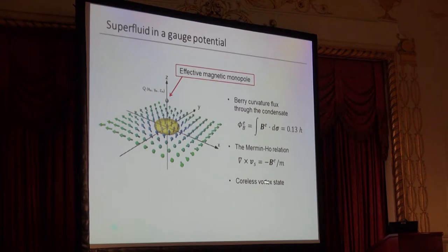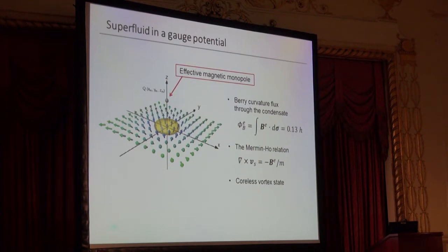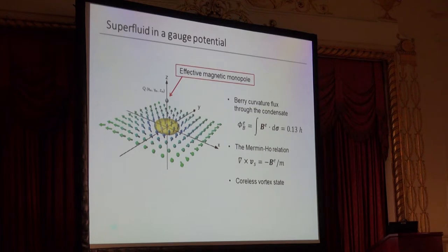An interesting way to understand this coreless vortex: initially assume the effective magnetic monopole is placed at infinity, giving a uniform magnetic field and no superfluid mass flow. As you bring this zero-field point from infinity along this line to the present position, you have an increasing magnetic flux penetrating through the condensate. An increasing magnetic flux generates an induced electric field in the azimuthal direction, which causes the condensate to rotate — and at the end you have a persistent current. That's a more intuitive way to understand the initial situation.